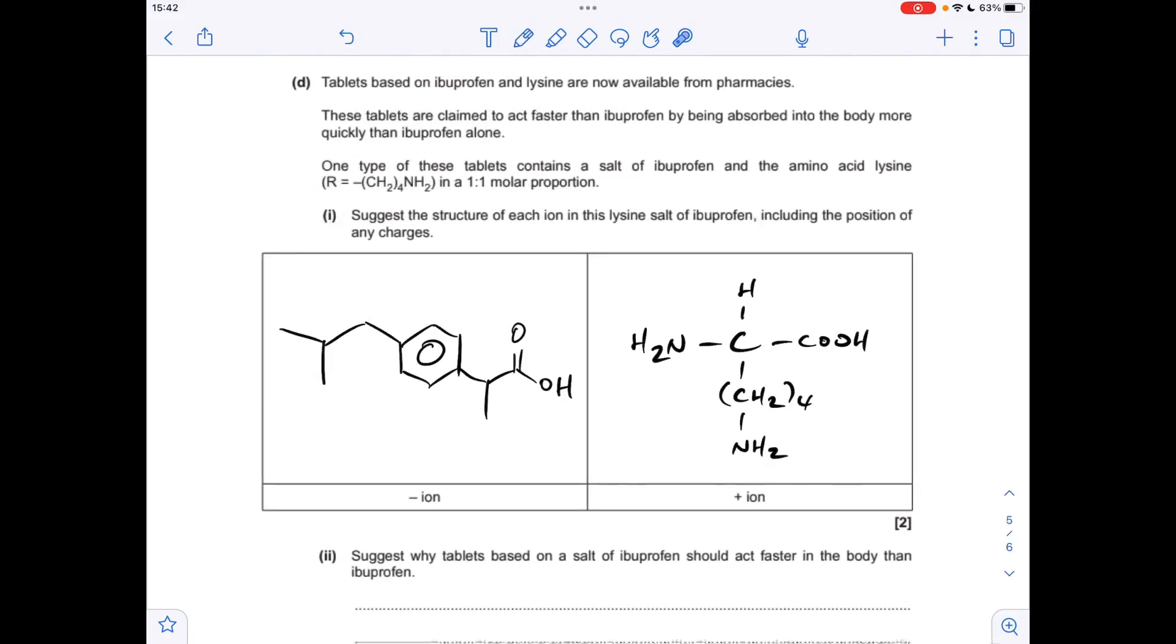Moving on to part D. So I've got the beginnings of the answer in the box. It's not the final answer. So we need to just think how can these interact with each other to form this salt based on ibuprofen and lysine. And the important thing to bear in mind is it's a one-to-one molar proportion. So this is an acid. It can donate a proton. This is a base. So is this, by the way. So we've got two base groups. These can accept a proton. But because it's in a one-to-one proportion, we can only put the H plus on one of these groups. So that's the answer for the negative ion. The positive ion, you could either draw that or you could draw that.